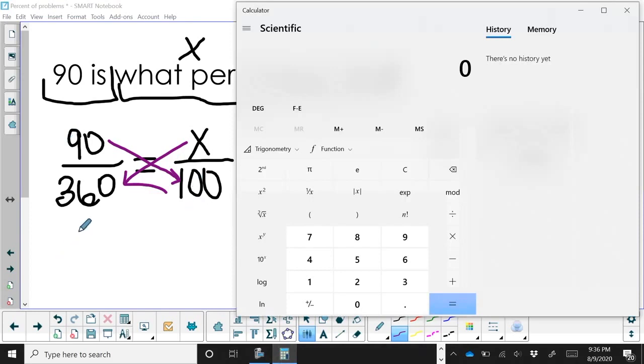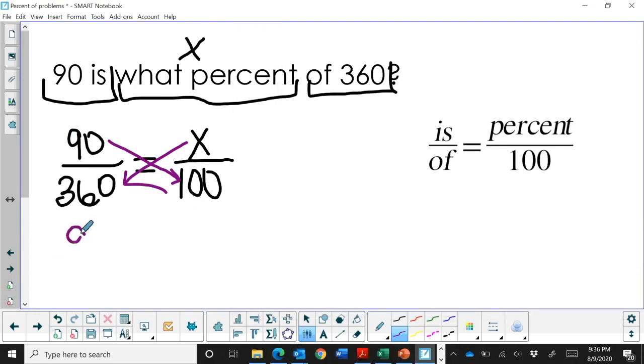90 times 100 is 9000 is equal to 360 times x, which is just 360x. Now to solve for x, I'm going to divide both sides by 360.